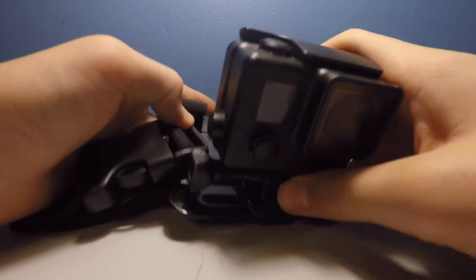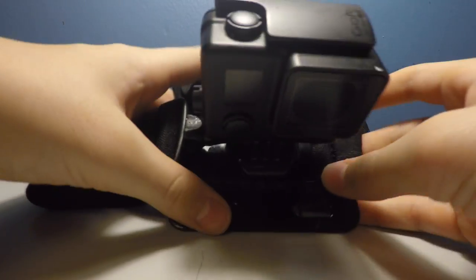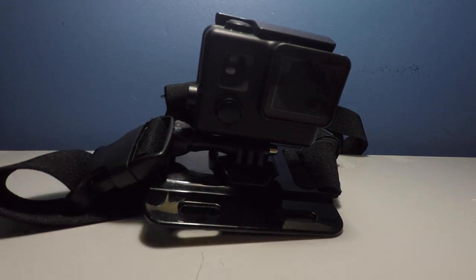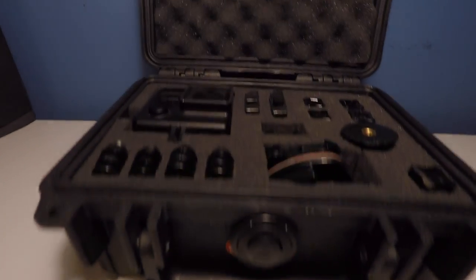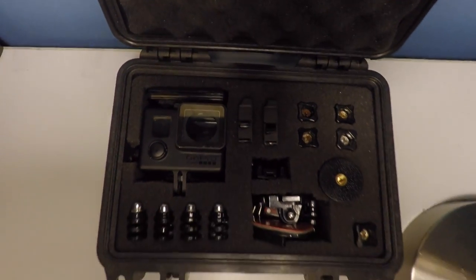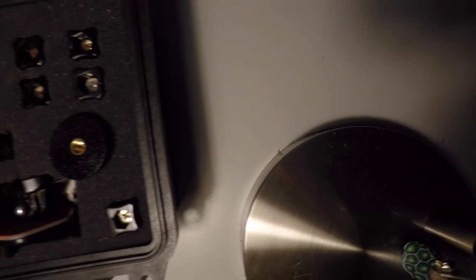This is the Pelican 1120 case I use to haul around all the GoPro stuff. Inside are two GoPro batteries, mounts, the GoPro, and my lucky die.